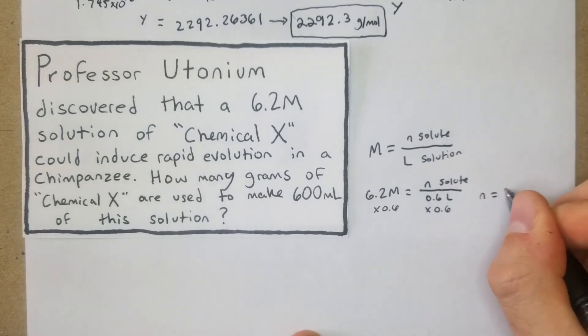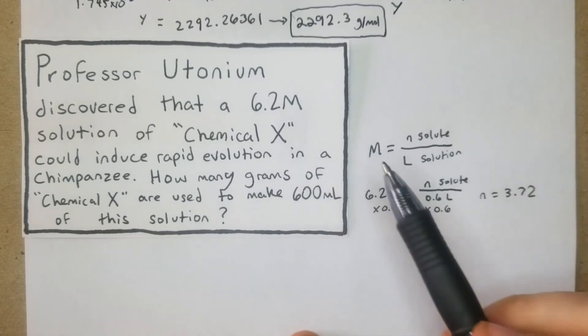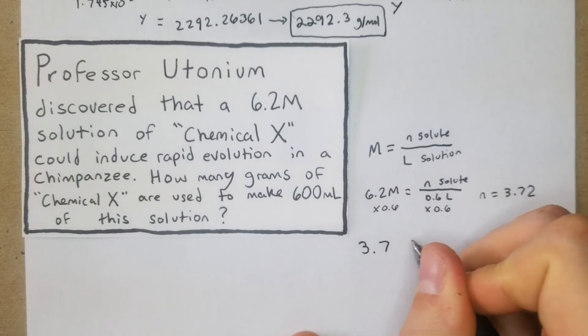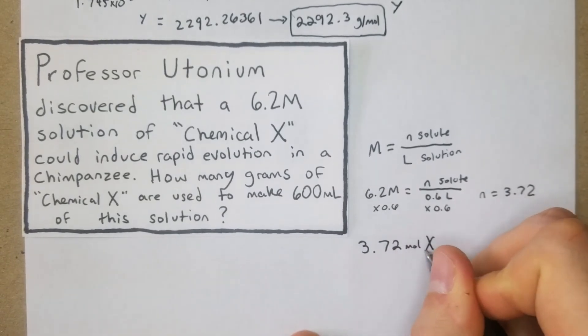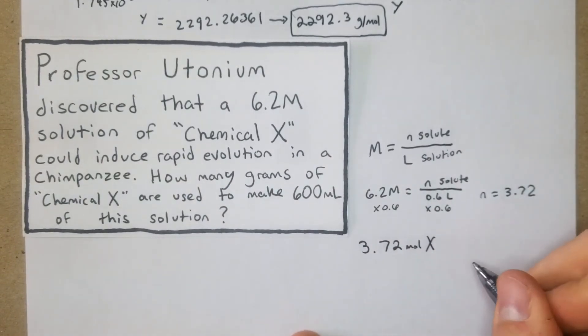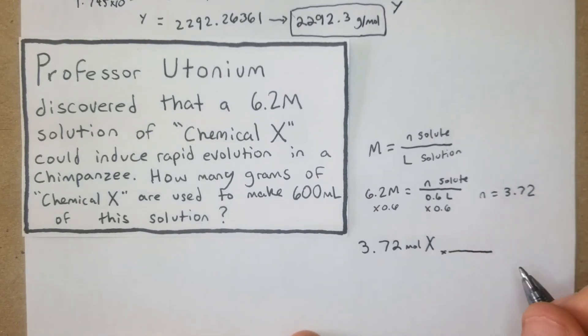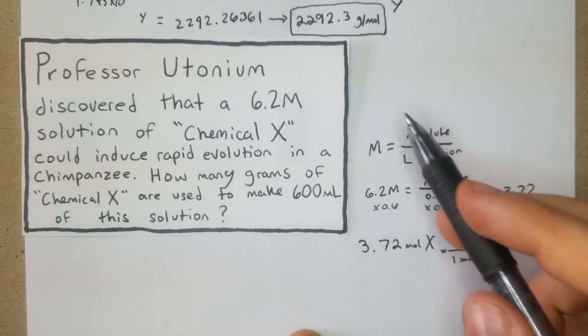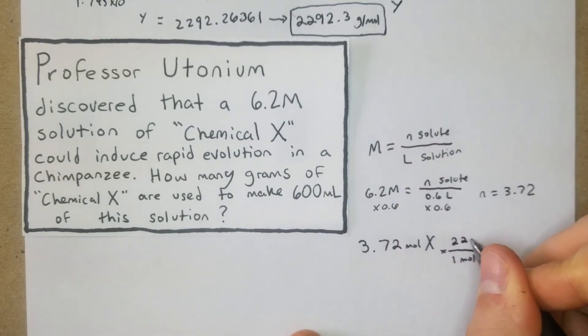We know we have 3.72 moles of chemical X going on here, so now we just have to do 3.72 moles of X times what our molar mass is. We're going to have one mole of X - get moles on the bottom so we can cross it out - equals what we just solved for all the way up here: 2292.3 grams of X. It's a pretty large molecule there, pretty large compound rather.